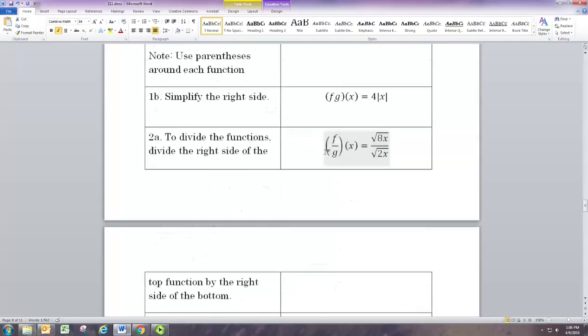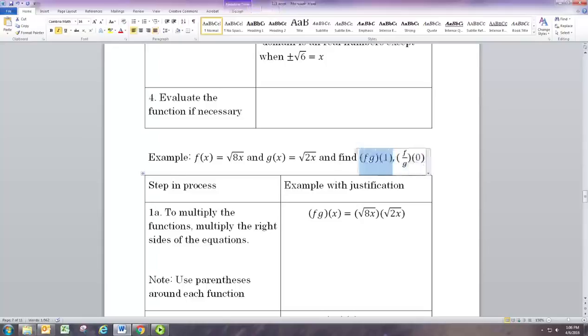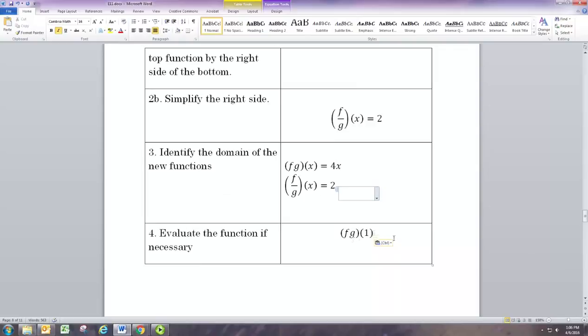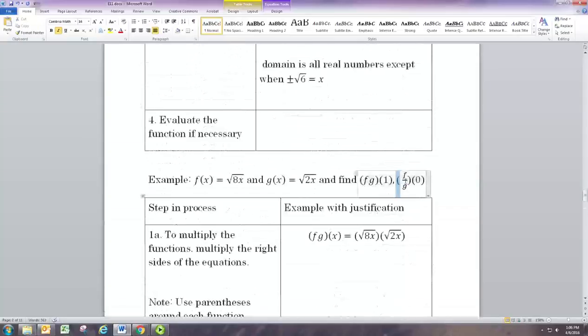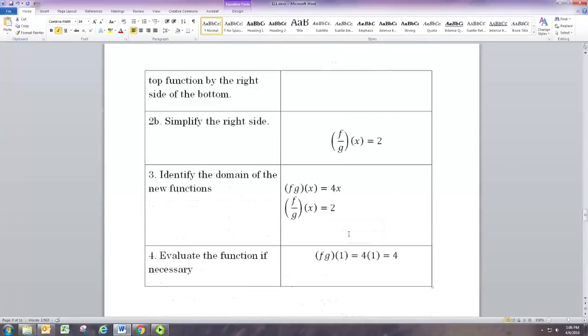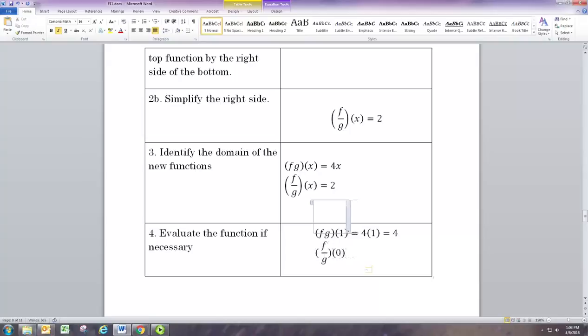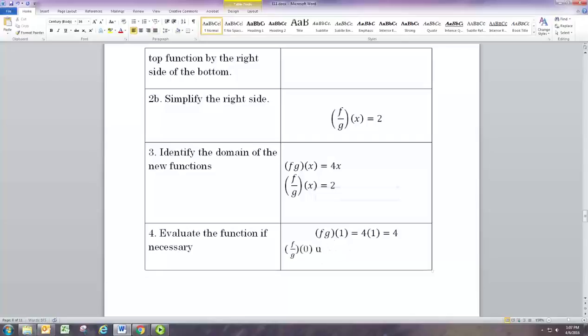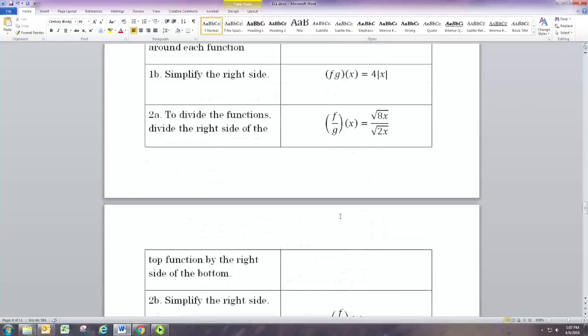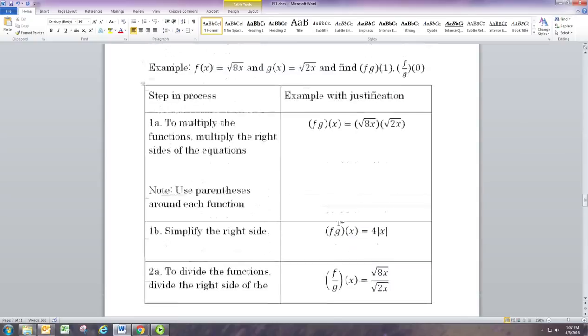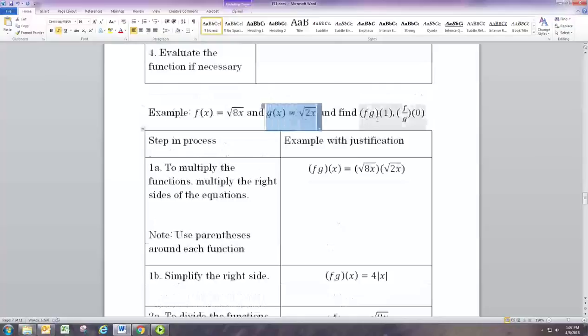Now we were asked to evaluate these functions so let's finish off with that. So f times g of 1 will be equal to 4 times 1, just using the formula here 4x, and that is equal to 4. Now the other question was what is f divided by g of zero? And while the equation says 2, we know that that's undefined since we assumed x could not be zero when we made that simplification. Again, g itself is going to be zero when x is zero.